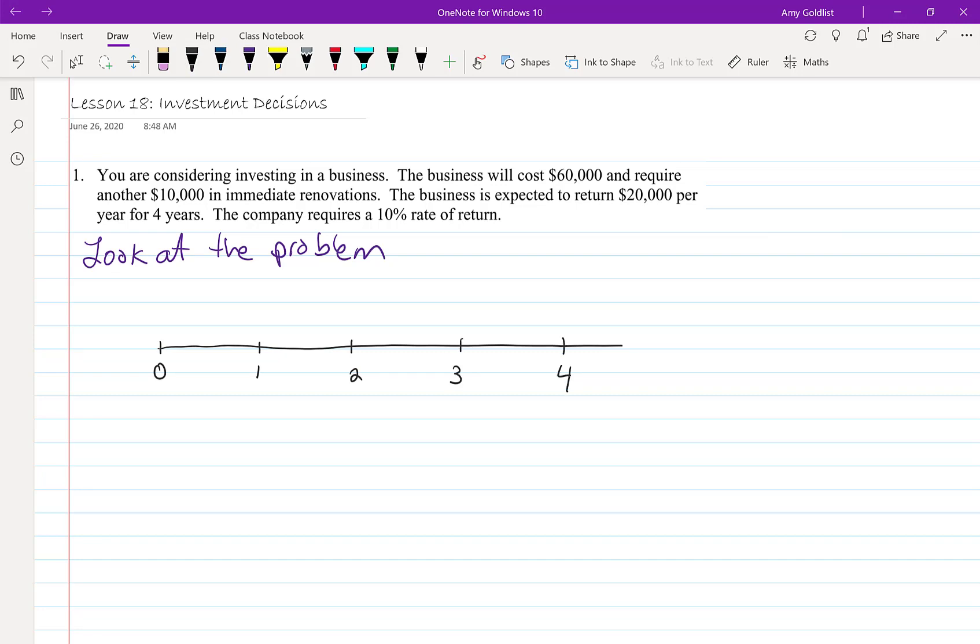So there we have four years worth of the business. Let's put in all of our money we are going to invest into the business. I'm putting a down arrow for things that are going into the business: $60,000 and we're putting in another $10,000. Those are investments in the business, they're going in red because we're paying them.